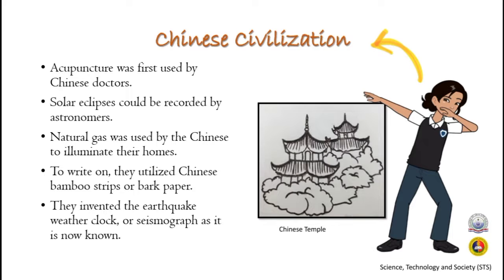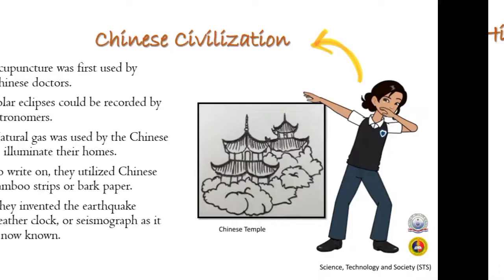In Chinese civilization, acupuncture was first used by Chinese doctors. Astronomers could record solar eclipses, natural gas was used to illuminate homes, and they utilized bamboo strips or bark paper for writing. They also invented the earthquake weather clock.